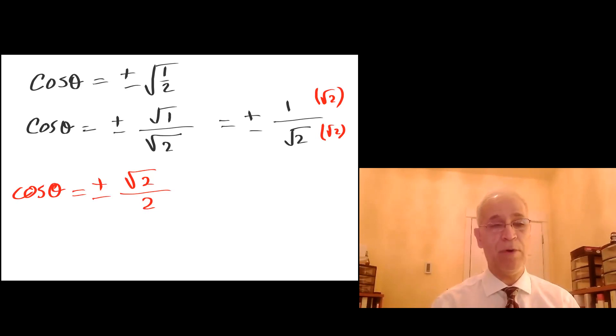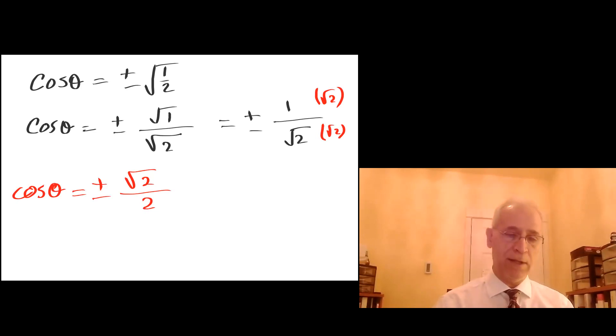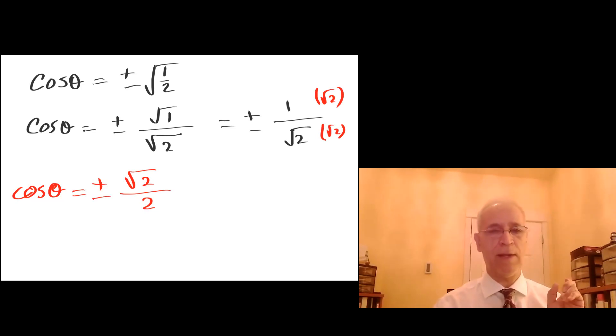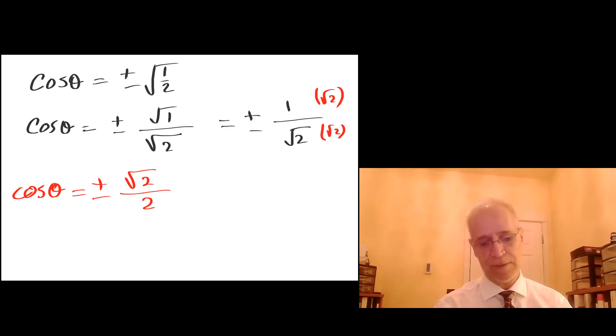The angles where cosine equals plus or minus root two over two are: pi over four, three pi over four, five pi over four, and seven pi over four.